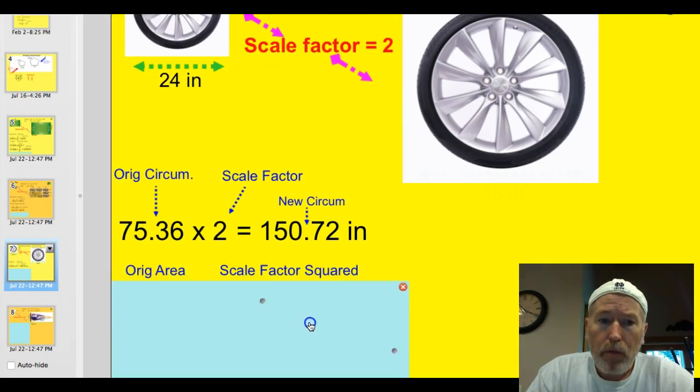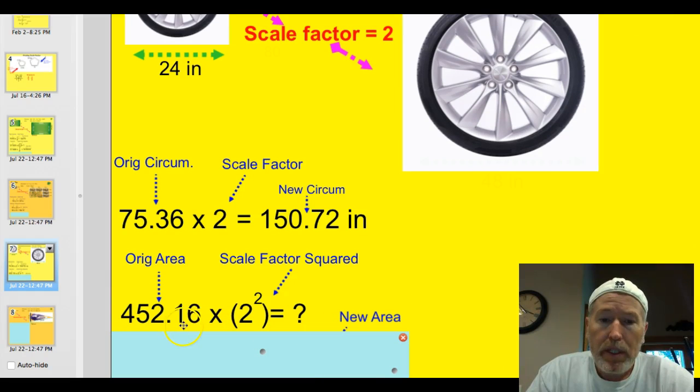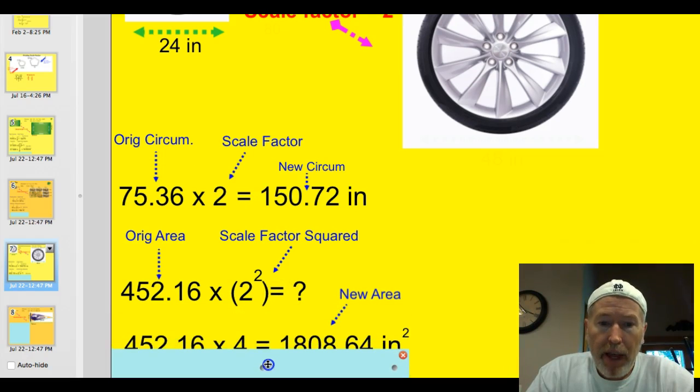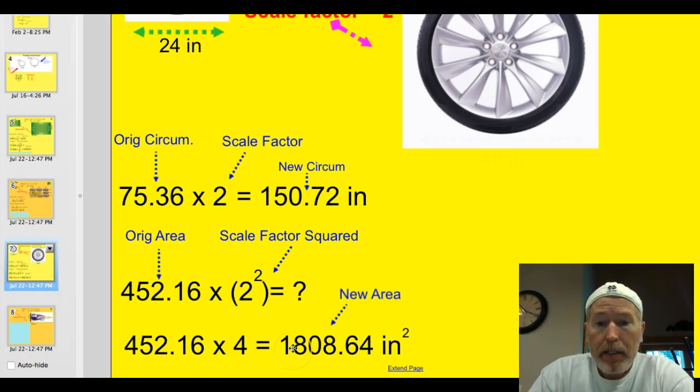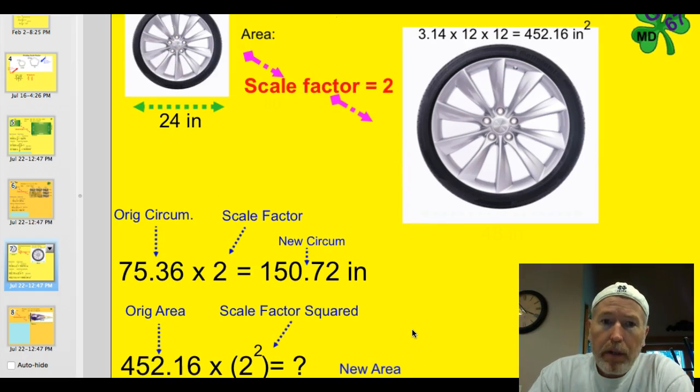How about the area? We'll take the original area of 452.16. We're going to multiply that times the scale factor squared. So let's simplify that. I'm just going to shut this dude down. That's 452.16 times 4, 2 squared, is 1,808.64 inches squared.